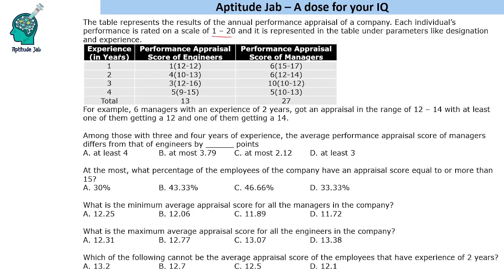So this is the table. It shows the experience in years: 1, 2, 3, 4 and there are two categories of employees — engineers and managers. This range denotes the appraisal rating.